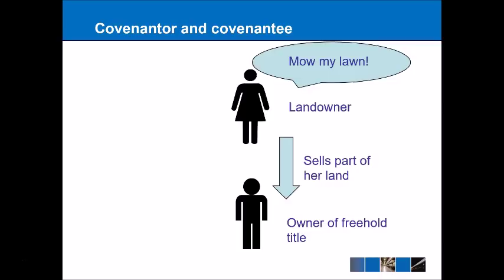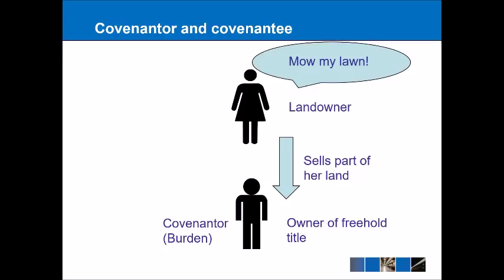So in this situation, we have the woman telling the man: I'll sell you this piece of land, but as part of that, you're going to have to mow my lawn. So the man in this situation is the covenantor or the promisor — the person who is making the promise to the landowner — and they are seen as having the burden of the covenant. The lady is regarded as the covenantee; she gets the benefit, which in this circumstance would just be having her lawn mowed.